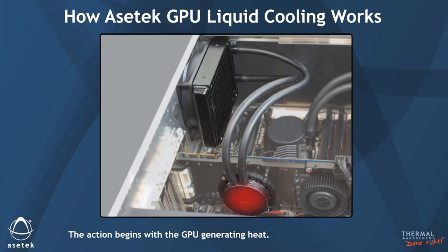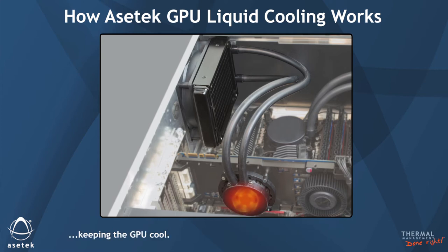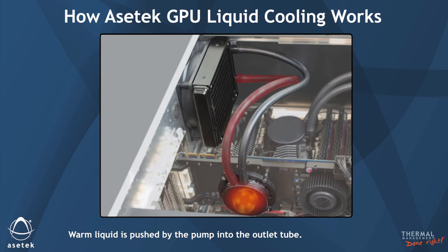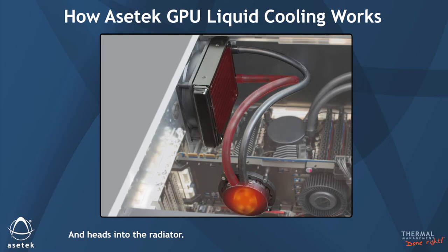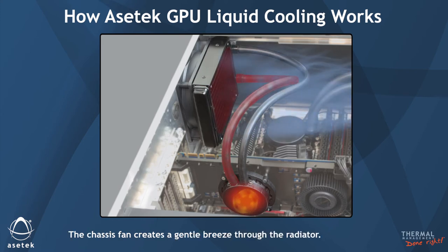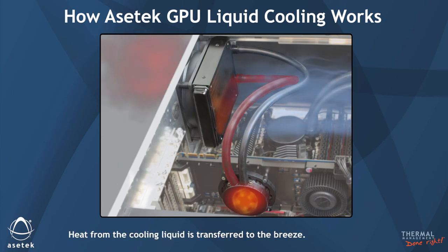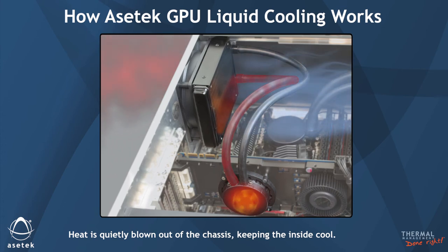Heat transfers through the cold plate into the cooling liquid, keeping the GPU cool. Warm liquid is pushed by the pump into the outlet tube and heads into the radiator. The chassis fan creates a gentle breeze through the radiator, and heat from the cooling liquid is transferred to the breeze.